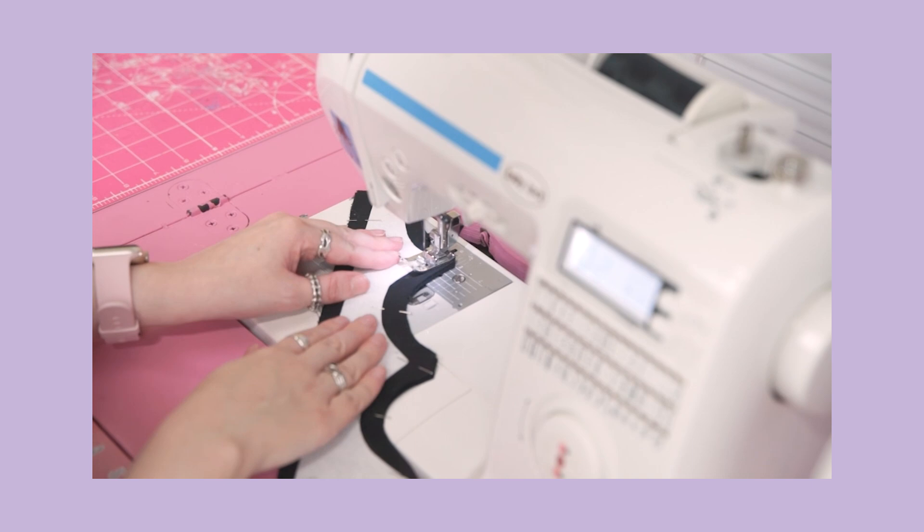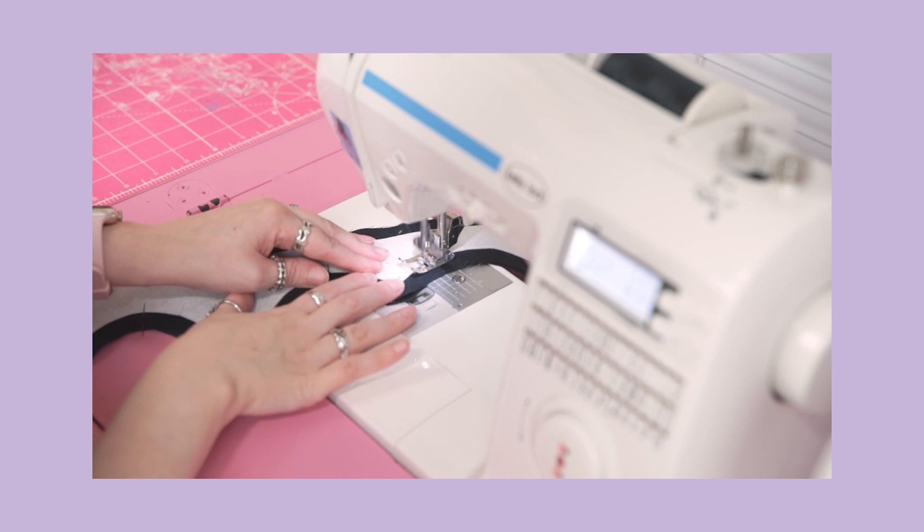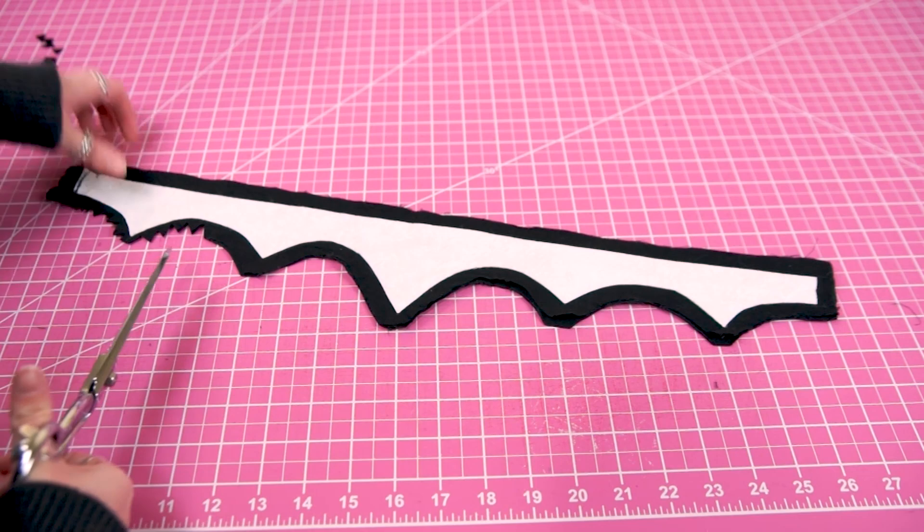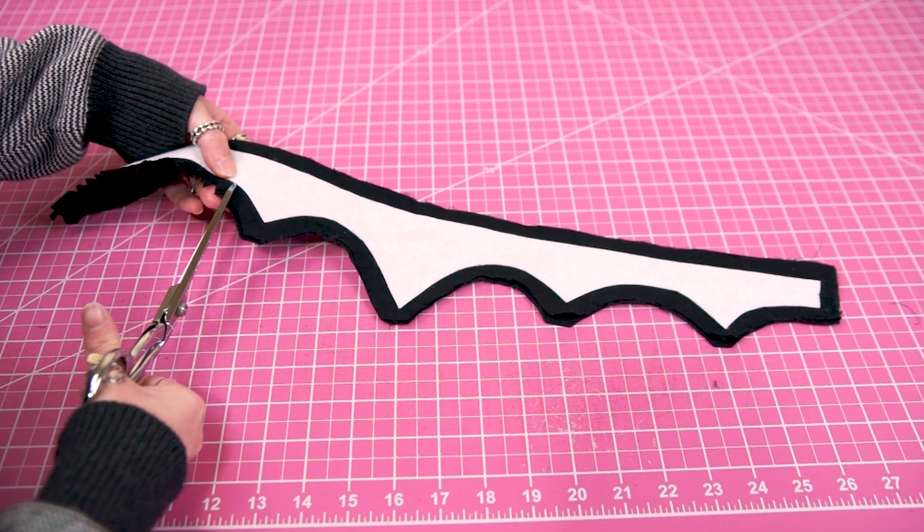Before the crown can be turned right side out, the seam allowance needs to be thoroughly trimmed. If you skip this step it will ruin your whole project, so don't underestimate how important it is. Clip notches out of the curves. It should wind up looking like lots of sharp little saw teeth.